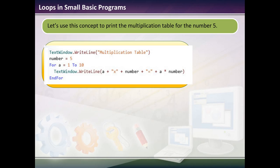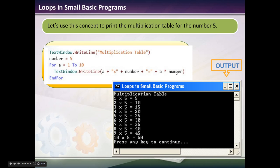You could use the same concept to print a multiplication table. I could say text window.writeline multiplication table. I could arbitrarily choose a number and let the number equal 5. Then I could say for a equals 1 to 10. When I text window.write and I say a, which the first time will be 1, plus x, plus the number, which is 5, plus the equal sign, plus what a times the number is, it'll run through the multiplication. So what it does is it says 1 times 5 is 5, 2 times 5 is 10, 3 times 5 is 15, and so on.